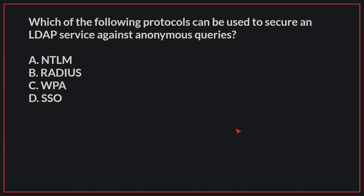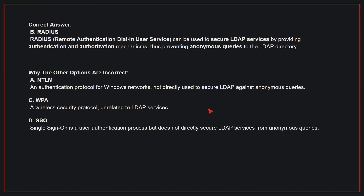Which of the following protocols can be used to secure an LDAP service against anonymous queries? The correct answer is B, RADIUS. RADIUS can be used to secure LDAP services by providing authentication and authorization mechanisms, thus preventing anonymous queries to the LDAP directory. Why the other options are incorrect: A, NTLM — this is an authentication protocol for Windows networks, not directly used to secure LDAP against anonymous queries. C, WPA — this is a wireless security protocol, unrelated to LDAP services. D, SSO — single sign-on is a user authentication process but does not directly secure LDAP services from anonymous queries. Therefore, the correct answer is B.